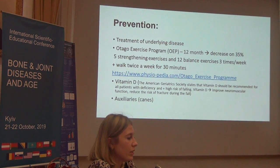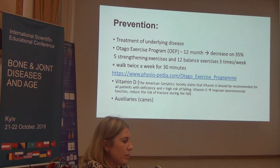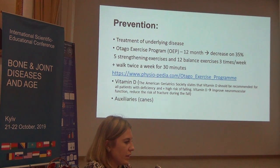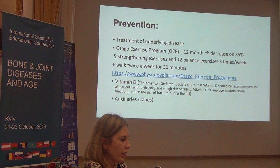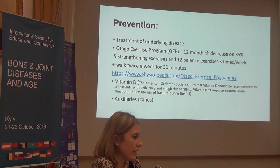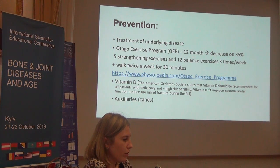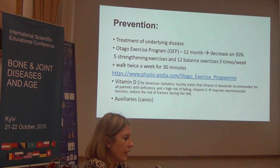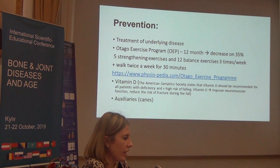For prevention, the main approach is to treat underlying diseases. Another key point is the Otago Exercise Program, which consists of five strengthening exercises and 12 balance exercises, and can decrease the risk of fall syndrome by up to 35%. Another point is supplementation with vitamin D, and people can also use assistive devices.